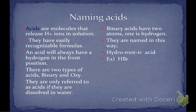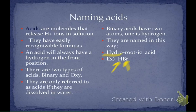Here's our first example. It's an acid because hydrogen is in the first position. I know it's binary because there are only two things: hydrogen and something else. I'm going to name the hydrogen 'hydro.' The root of bromine, I'm going to change to 'bromic' and call it acid. So that's hydrobromic acid.